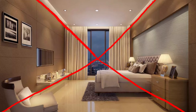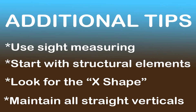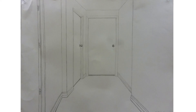Even if you can't see it through the back wall, the point where the X meets is the vanishing point. Any straight vertical lines need to be parallel with the vertical edge of your paper. This includes both door frames and the seams between walls.